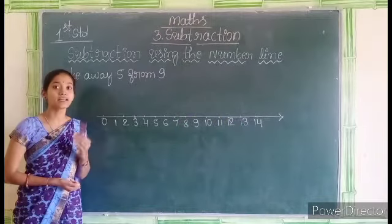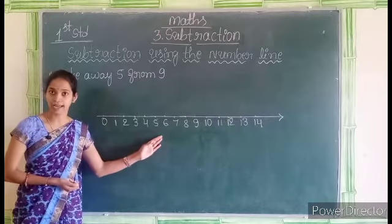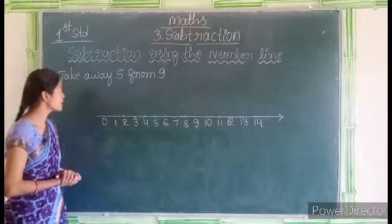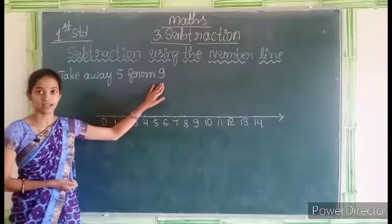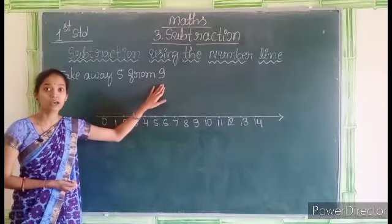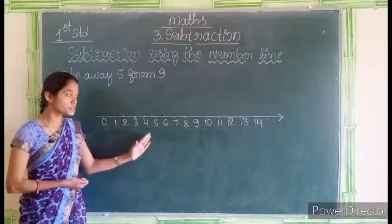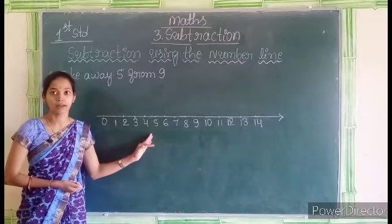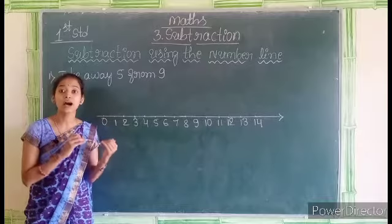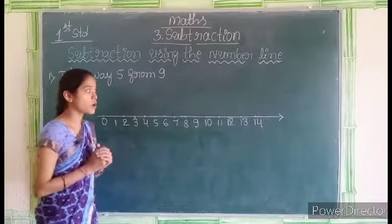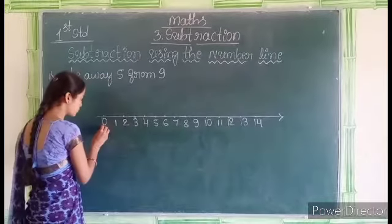Now we have to subtract numbers using this number line. The first problem is: take away 5 from 9. We have to take away 5 from 9 using this number line. For that, first we have to count 9 points on this number line. Let us count: 0,